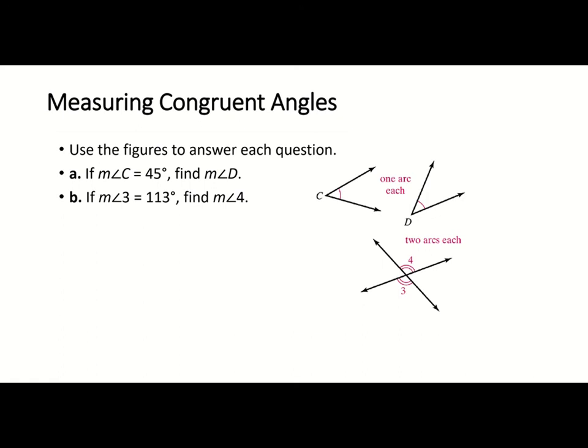Here they give us a picture with different angles and questions to answer. The measure of angle C is 45 degrees — since C has one arc and D also has one arc, they're congruent, so D would also be 45 degrees. For part B, the measure of angle three is 113 degrees — angle three has two arc marks and angle four also has two, so they're congruent, meaning angle four would also be 113 degrees.